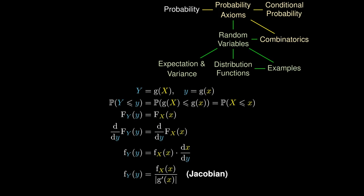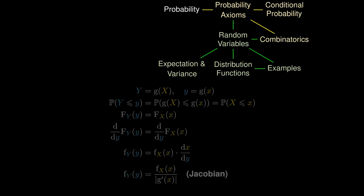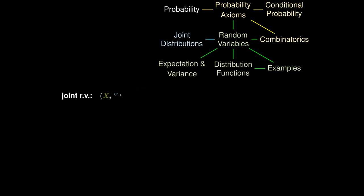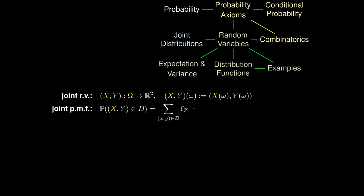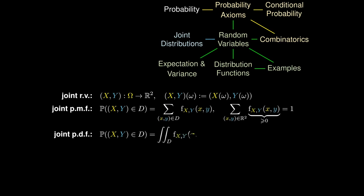A really important question is what happens when we consider two-dimensional measurements of an experiment. This is known as the joint random variable (X, Y). If X and Y are discrete, we can define their joint probability mass function in a similar manner as before. And if they are jointly continuous, we can define their joint probability density function as a two-dimensional analog.